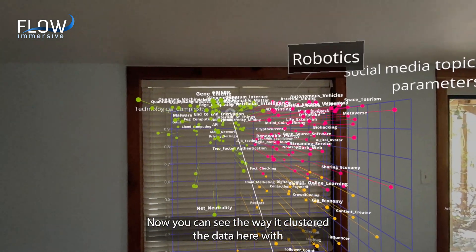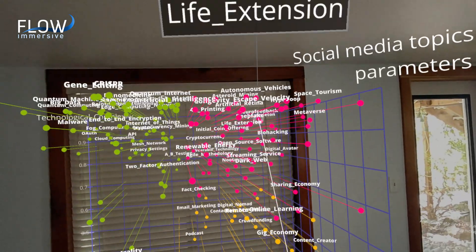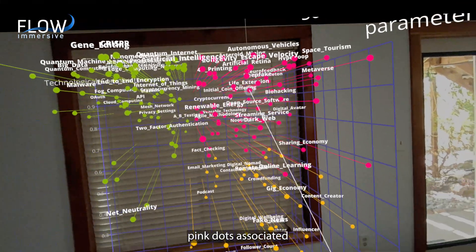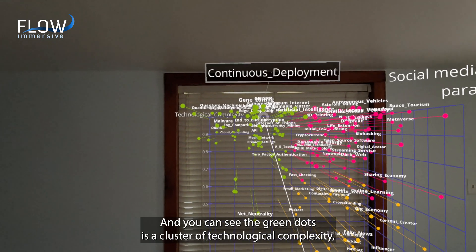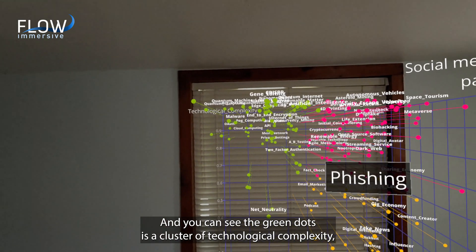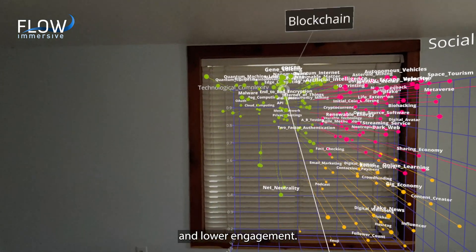Now you can see the way it clustered the data here with pink dots associated with high complexity, high engagement. And you can see the green dots is a cluster of technological complexity and lower engagement.